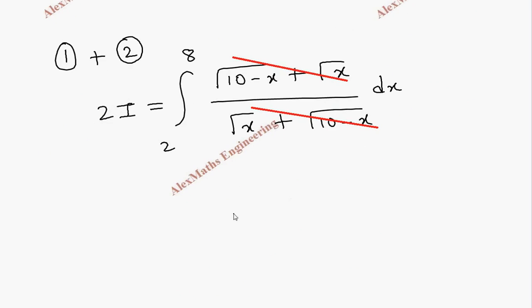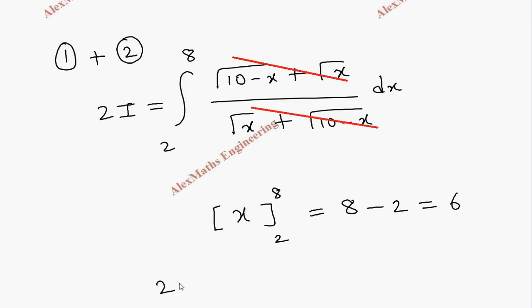Integration of dx gives x, and substituting the limits from 2 to 8 gives 8 minus 2 equals 6. So 2I equals 6, therefore I equals 6 divided by 2, which is 3.